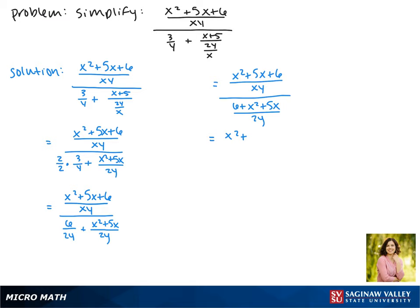Our first term will stay the same, x squared plus 5x plus 6 over xy. And we're multiplying by 2y over x squared plus 5x plus 6.